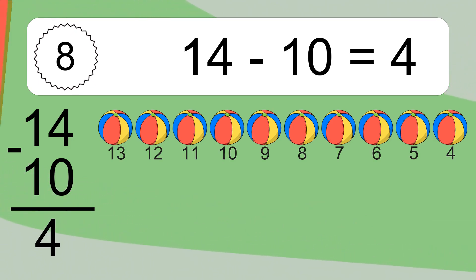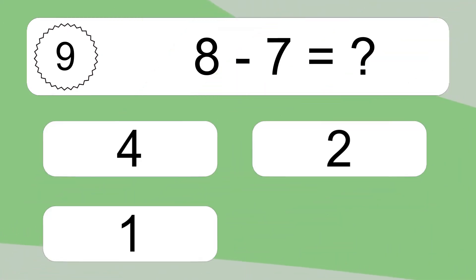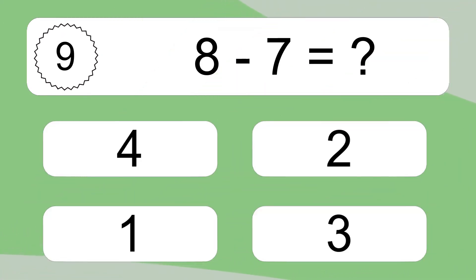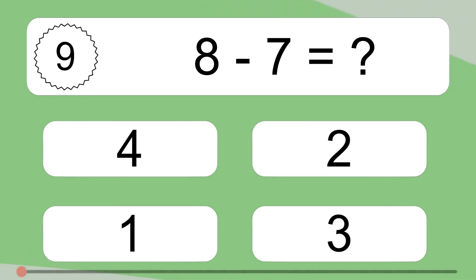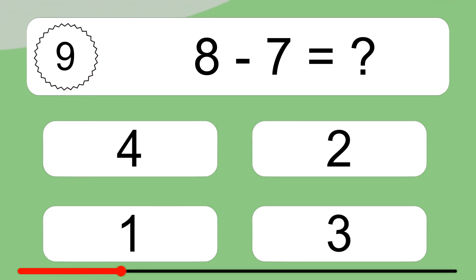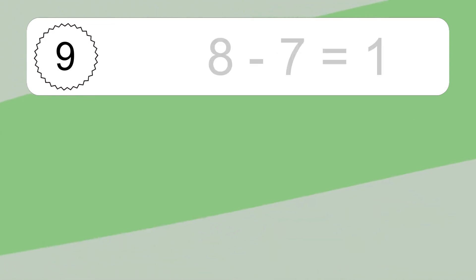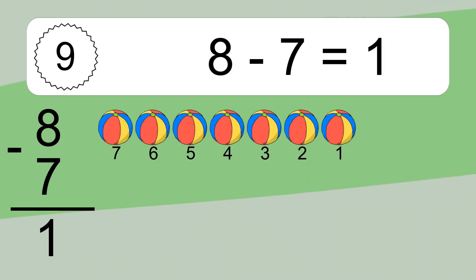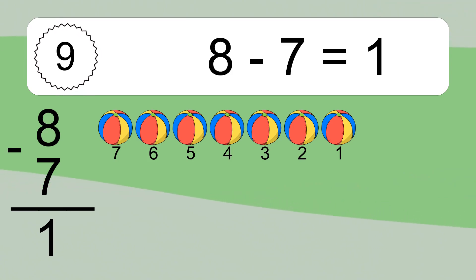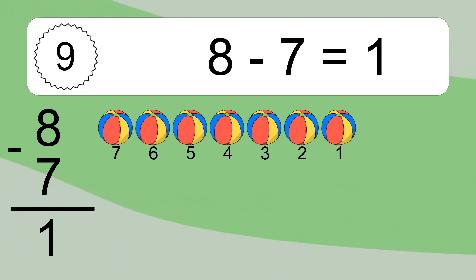8 minus 7 equals what? 8 minus 7 equals 1. Let's count it. 7, 6, 5, 4, 3, 2, 1.